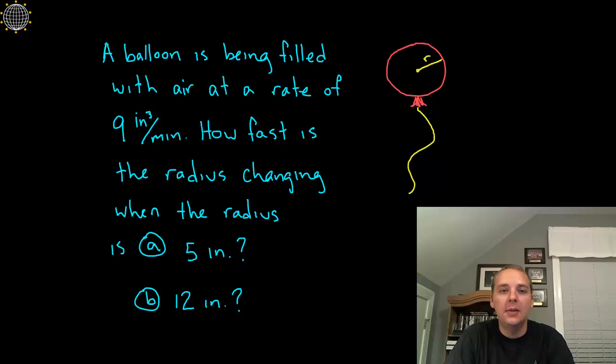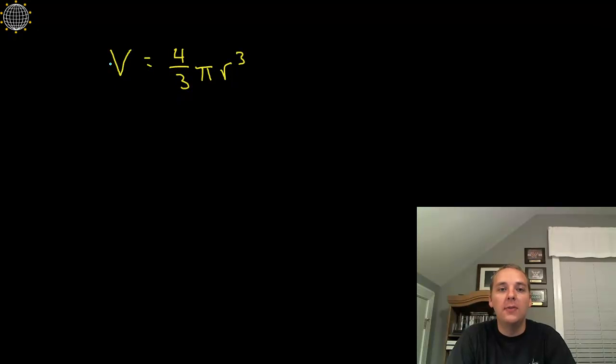So I read the problem, I see a balloon being filled with air, that sounds like volume because we have cubic inches. The volume depends on the radius of the balloon. And so right off the bat I think we're going to use the formula V equals 4 thirds pi r cubed, and that's the volume of a sphere.